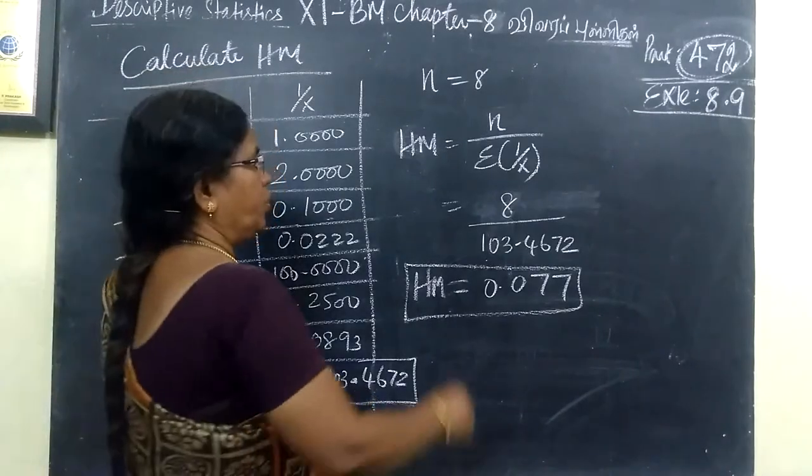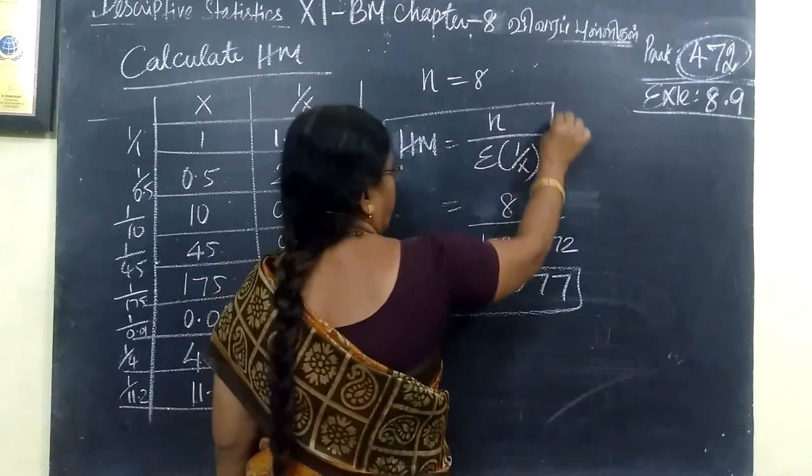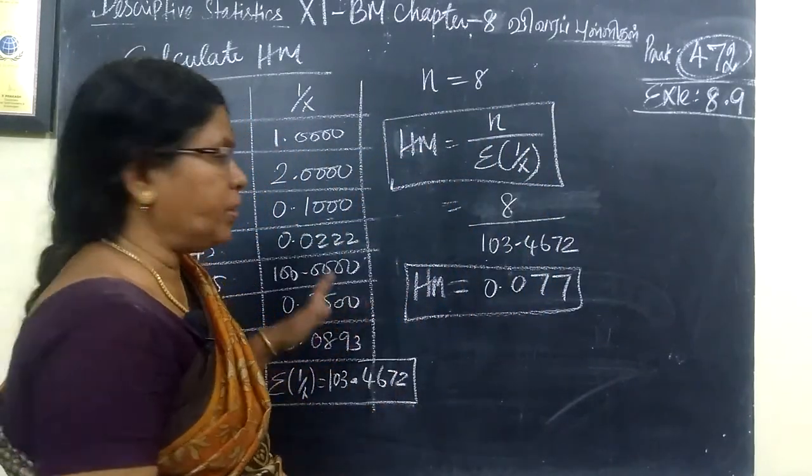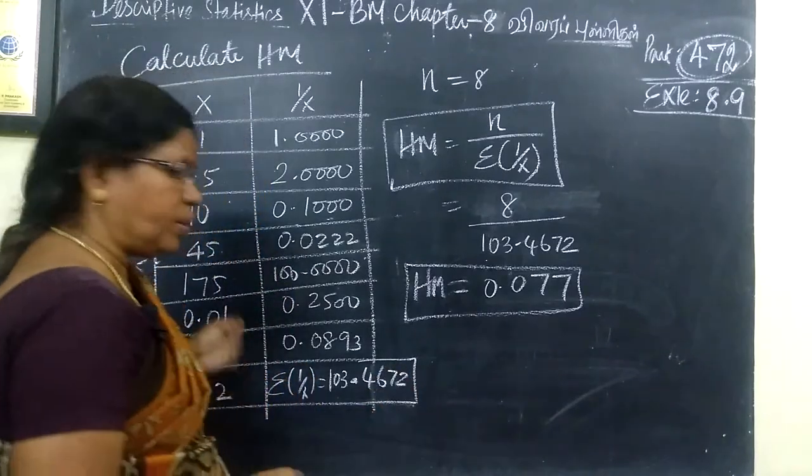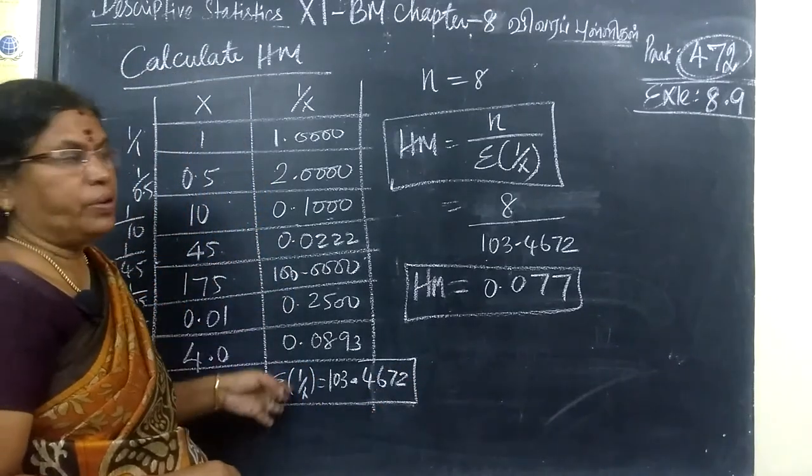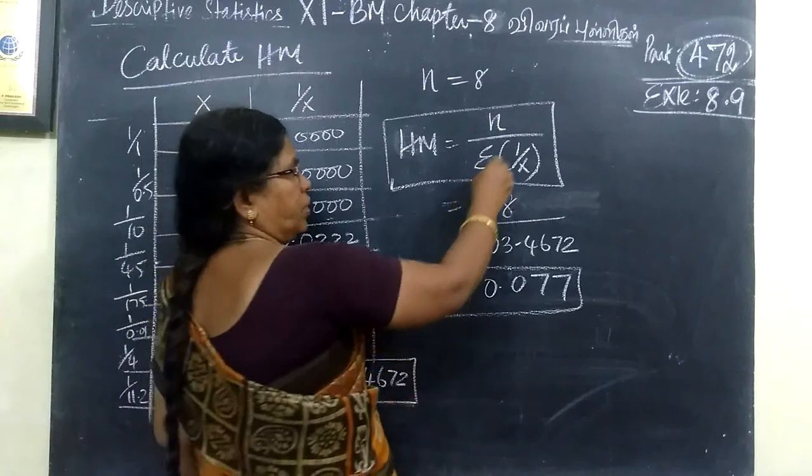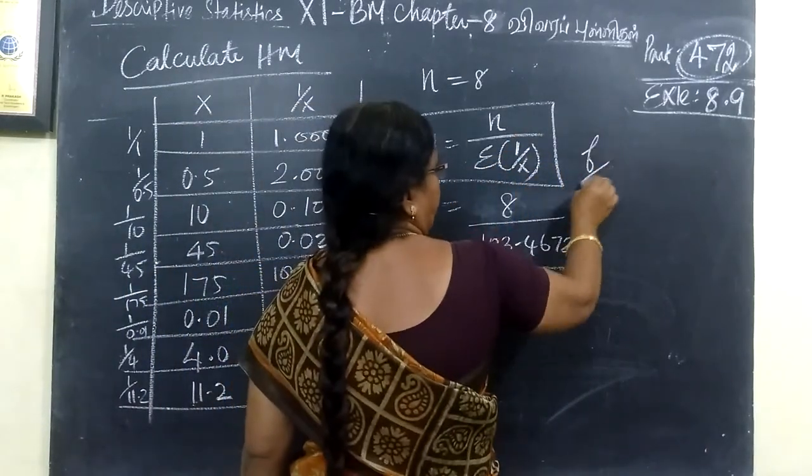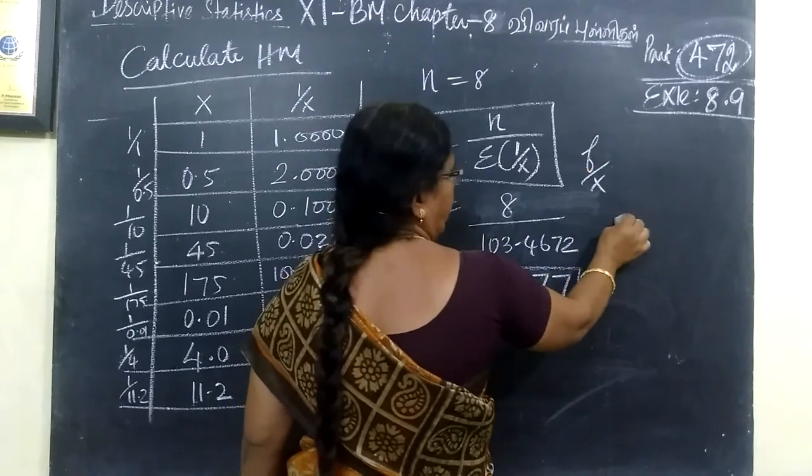And harmonic mean formula is n by... Discrete value: discrete is individual, separate value. There is no frequency at all. Just 1 by x. Frequency is f by x.